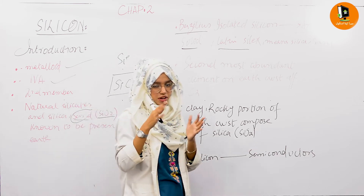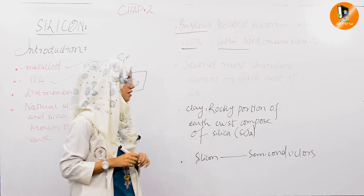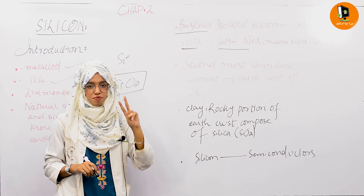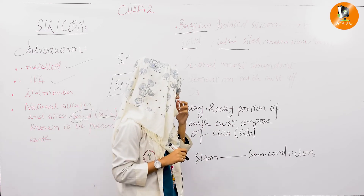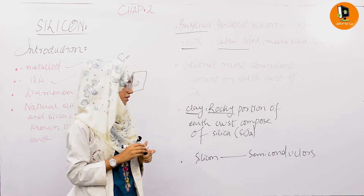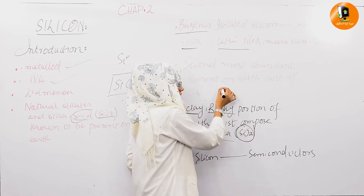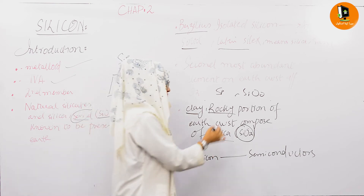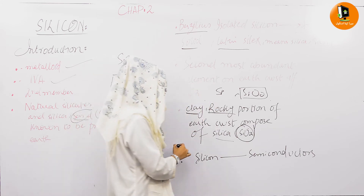Another important point: silicon is the second most abundant element in the Earth's crust, after oxygen. Silicon is composed of silica, whose formula is SiO2 — silicon is Si and silica is SiO2. Silicon exists in the form of silica, and its occurrence is obtained in combined state as compared to its free form.